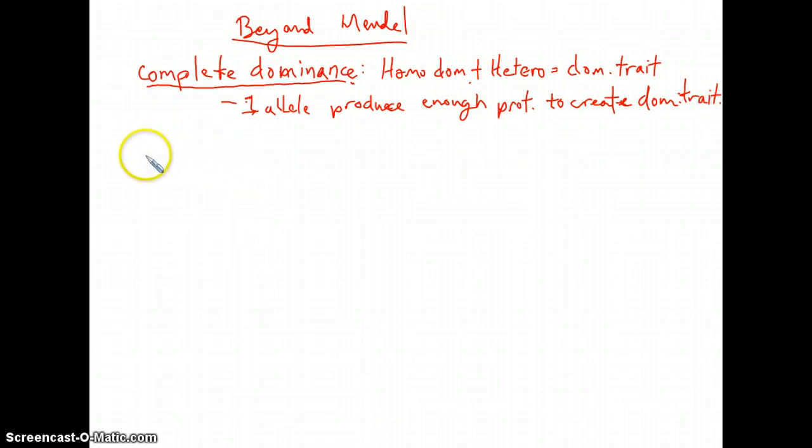Now, in the case of incomplete dominance, it might be easiest to think about an in-between phenotype. That's an easy way to remember this. So just think in-between phenotype.